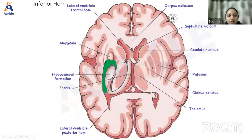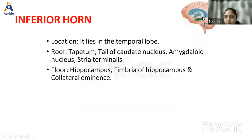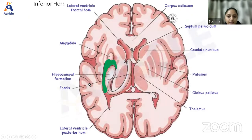The inferior horn is located in the temporal lobe. This section is very important for entrance examinations. The inferior horn is related to the hippocampus. The roof is formed by the tapetum and tail of the caudate nucleus, amygdaloid nucleus, and stria terminalis. The floor is formed by the hippocampus, fimbria of the hippocampus, and the collateral eminence.